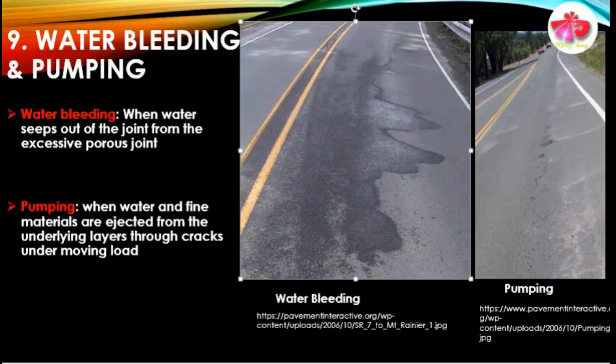The final typical failure pattern in the flexible pavement is water bleeding and pumping. Water bleeding occurs when water seeps out from joints through excessively porous joints. Pumping occurs when water and fine materials are ejected from the underlying layers through cracks under moving load.